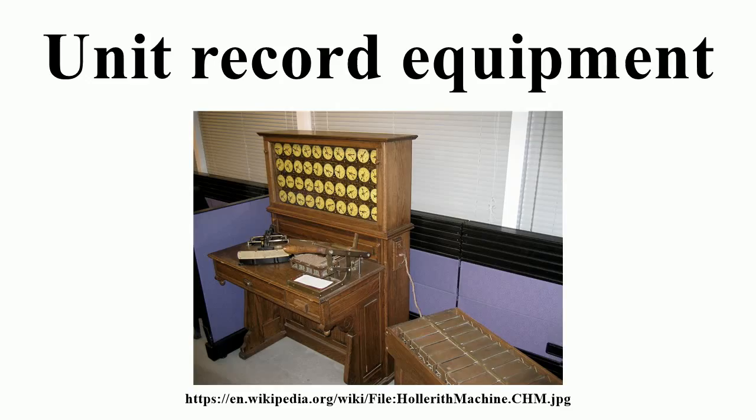Many organizations were loath to alter systems that were working, so production unit record installations remained in operation long after computers offered faster and more cost-effective solutions. Specialized uses of punched cards, including toll collection, microform aperture cards, and punched card voting, kept unit record equipment in use into the 21st century. Another reason was cost or availability of equipment — for example, in 1965 an IBM 1620 computer did not have a printer as standard equipment, so it was normal to punch printed output onto cards and print these on an IBM 407 accounting machine.